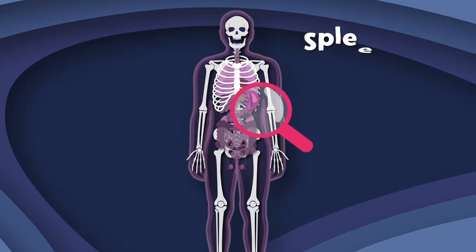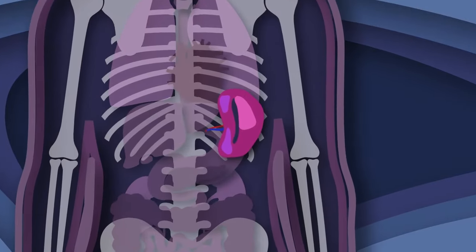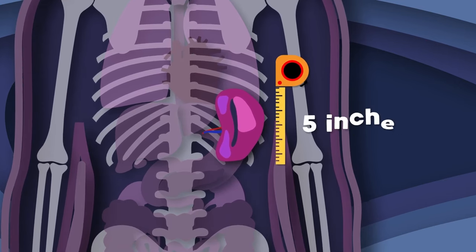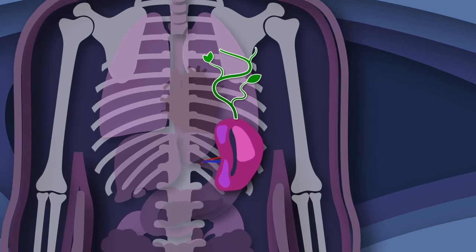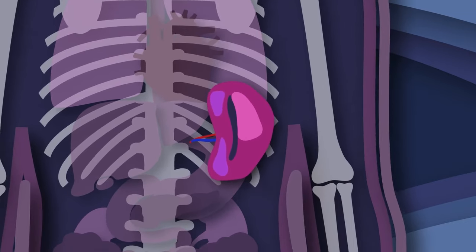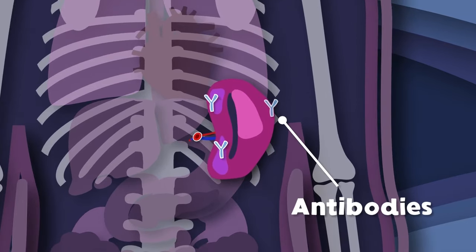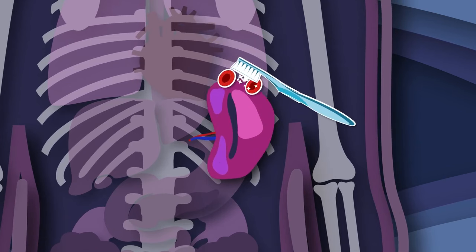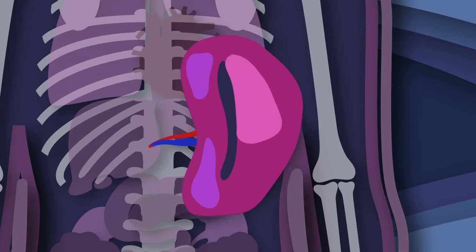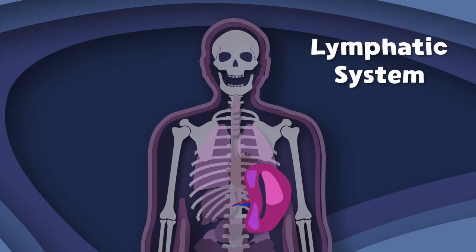I am your spleen. You will learn what this means. I am purple, five inches long, and I'm shaped like a bean. I'm your spleen. You will learn what this means. I produce antibodies and I keep your blood clean. I'm the spleen, the largest organ in the lymphatic system.